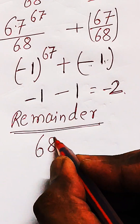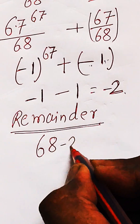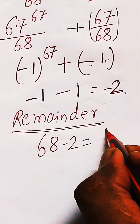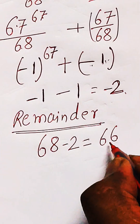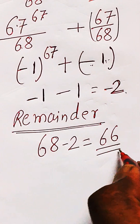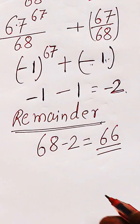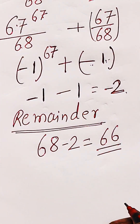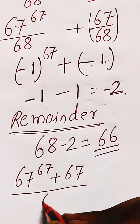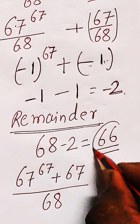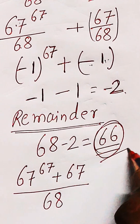Now minus 2 is left. Since we cannot have a negative remainder, we convert: 68 minus 2 equals 66. So the final remainder is 66 when this expression is divided by 68.